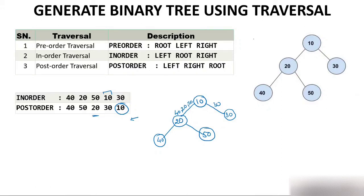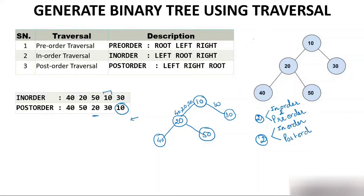So I've shown you both methods by which you can create a tree using traversal. One important thing to understand: if you have been asked to create a tree, two orders will be given. It could be either in-order and pre-order, or in-order and post-order. In-order is mandatory to create a binary tree — I'm saying binary tree, not binary search tree; those are two different terms. Always remember: to create a binary tree, two orders are given, one of which will be in-order, and the second could be pre-order or post-order.